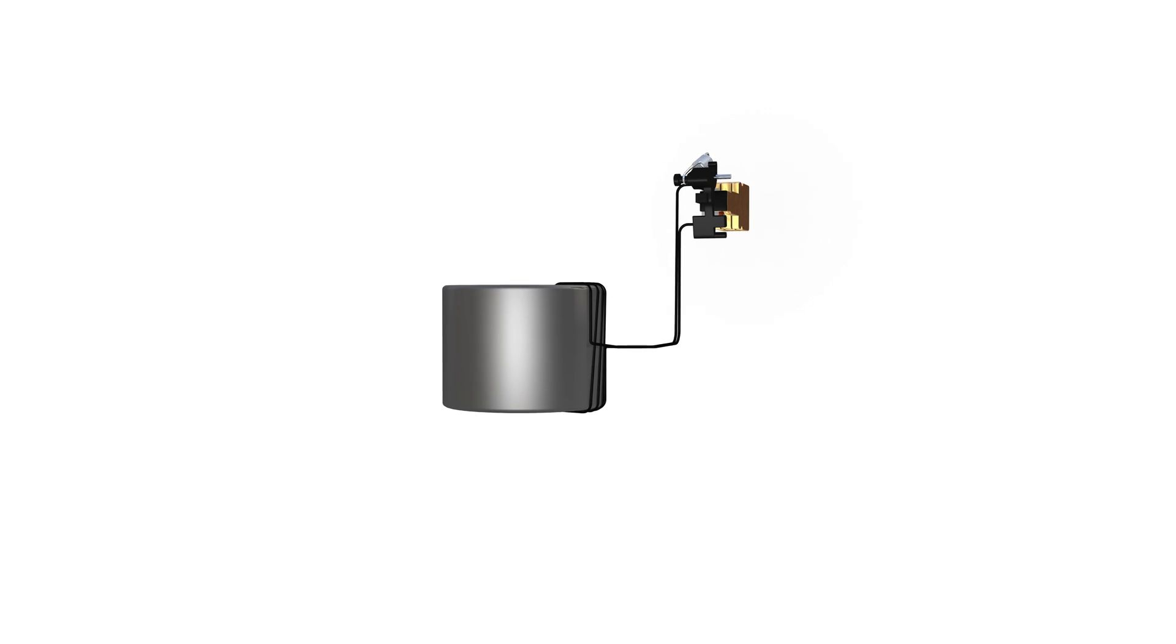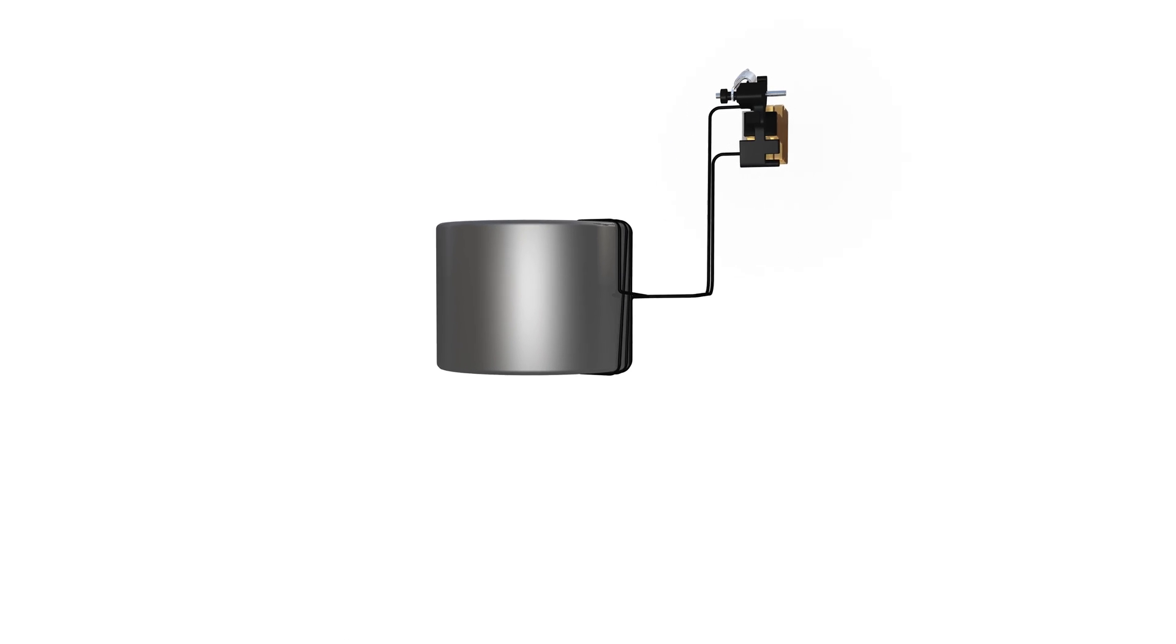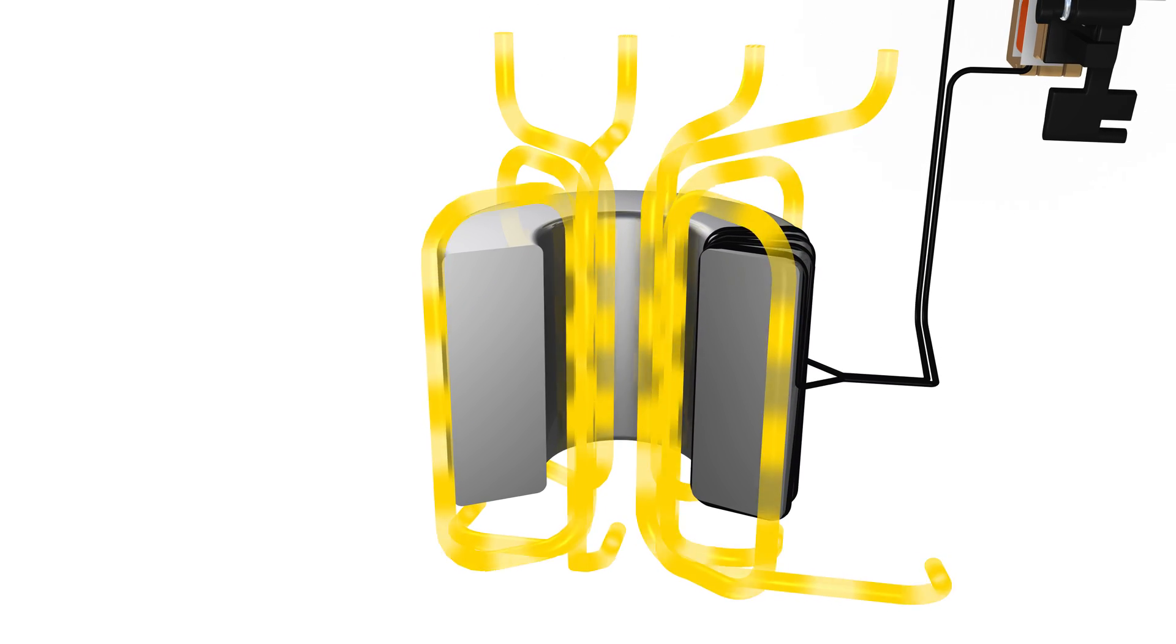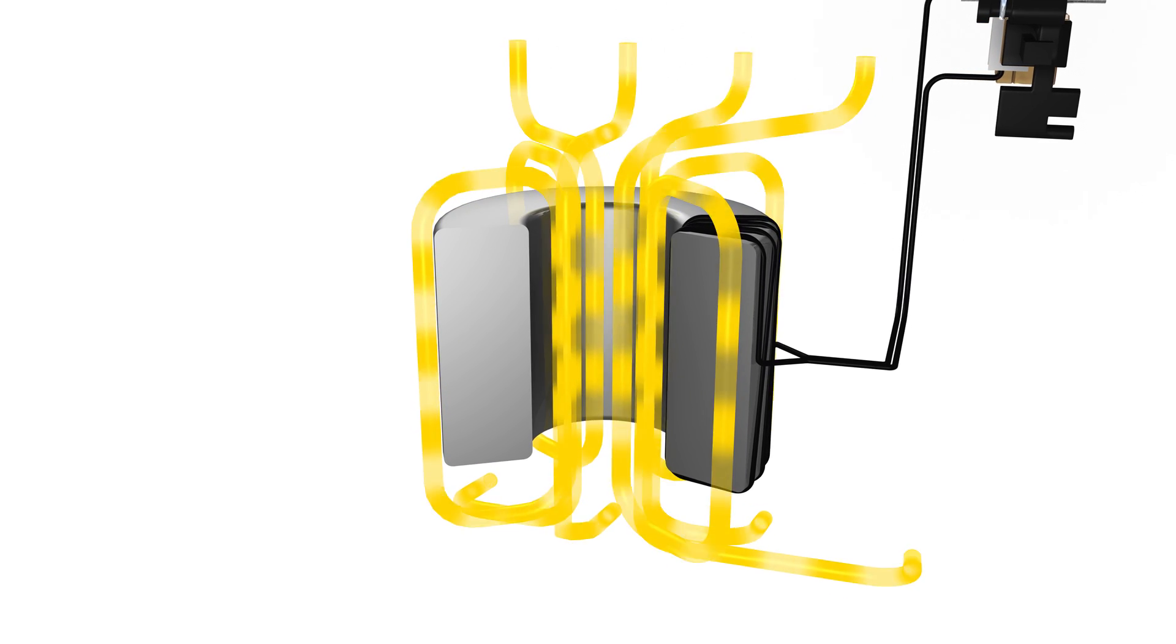The current flows through the summation current transformer in the RCCB. In a fault-free system, the magnetic fields generated by the live conductors cancel each other out. Thus, there is no residual magnetic field to induce a voltage on the transformer secondary winding.